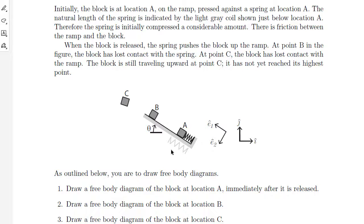There is friction between the ramp and the block. When the block is released, the spring pushes the block up the ramp. When the block reaches point B, it has lost contact with the spring and keeps going. At point C, the block has lost contact with the ramp and is still traveling upward, not yet having reached its highest point. The task is to draw a free body diagram of the block at locations A, B, and C.